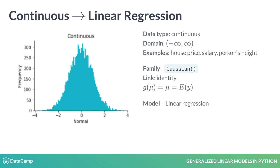The identity link function is of the simplest form, where it equals mu, or the mean of the response. As such, it specifies the linear regression model, where y is assumed continuous and for which we can assume a normal distribution for the response. Therefore, the linear regression is a special case of the GLM.